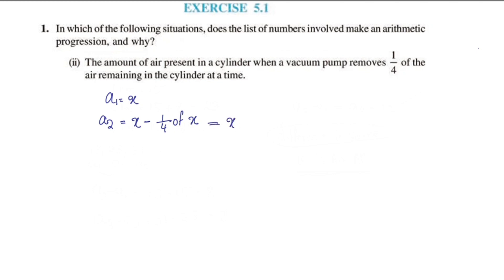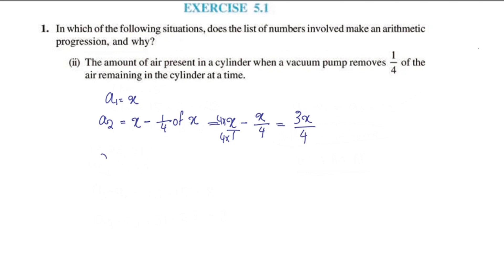x minus 1/4 of x: taking LCM as 4, we get 4x minus x over 4 = 3x/4. So the second term A2 = 3x/4.